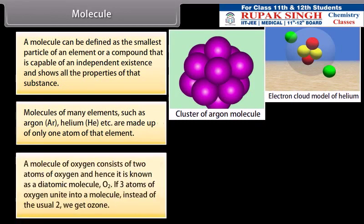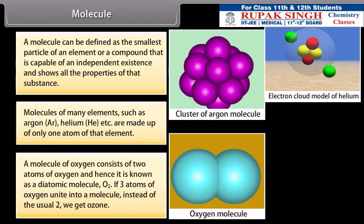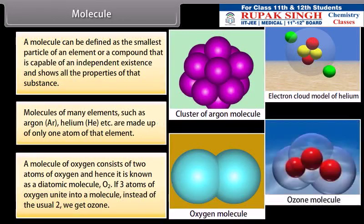A molecule of Oxygen consists of two atoms of Oxygen and hence it is known as a diatomic molecule, O2. If three atoms of Oxygen unite into a molecule instead of the usual two, we get ozone.